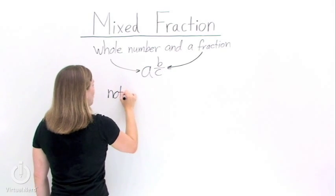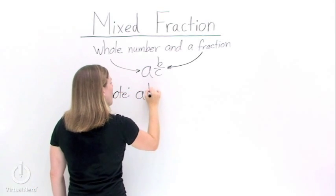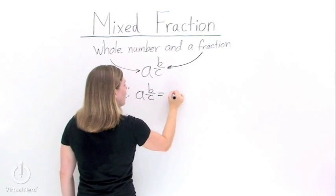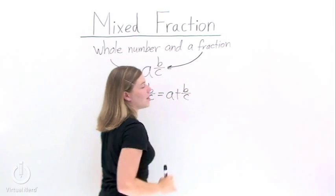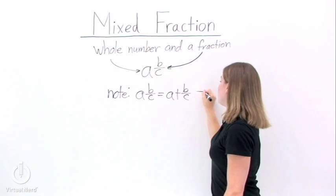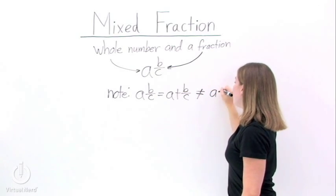Now there's one big thing to note about mixed fractions. If you have something like A and B over C, that's equal to A plus B over C. It is not equal to A times B over C.